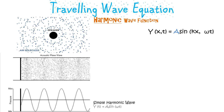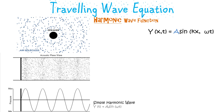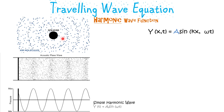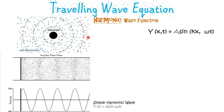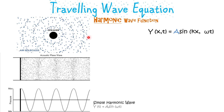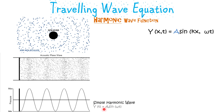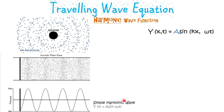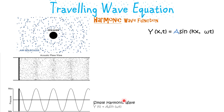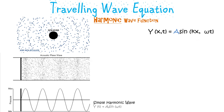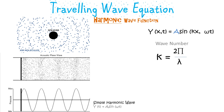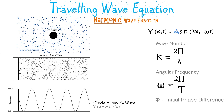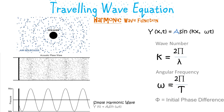We will now discuss traveling harmonic waves. Sound waves are a good example of traveling harmonic waves — they are generated at a point source and travel in all directions through pressure waves. The equation y equal to A sine(omega t) describes a simple harmonic wave, and since this is a traveling wave we write it as a function of x and t, where k stands for the wave number, omega is the angular frequency, and psi is the initial phase difference.